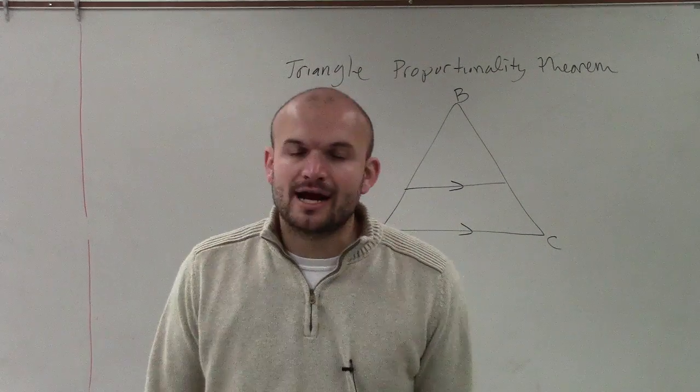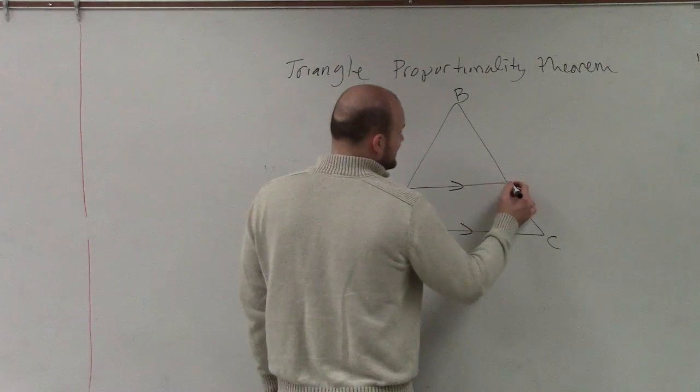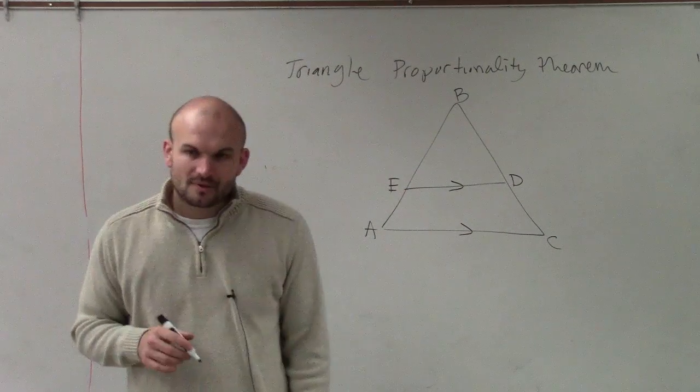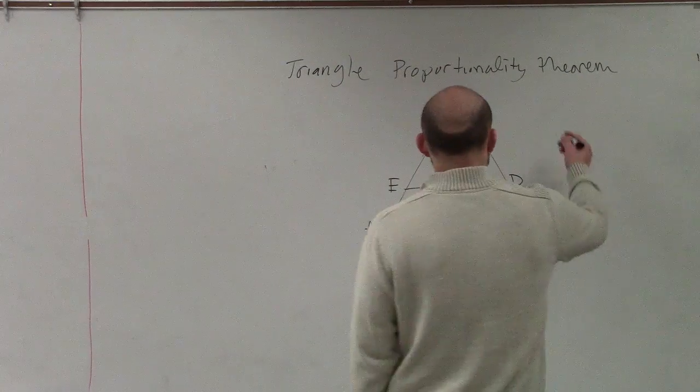So this is what we call the Triangle Proportionality Theorem. If it is parallel to one of your sides, then these two lengths, D and E, are now going to allow us to create some proportions.